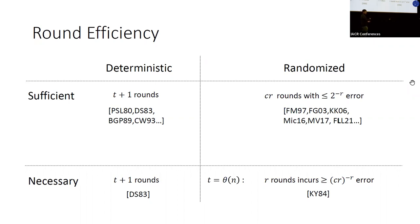We also know, from almost 40 years ago, the lower bound by Karlin and Yao, which says that if you have a linear number of corruptions then in r rounds any BA protocol incurs error at least of the form r to the minus r. So the question is: can we close this gap — going from two to the minus r down to r to the minus r?